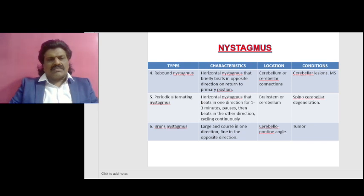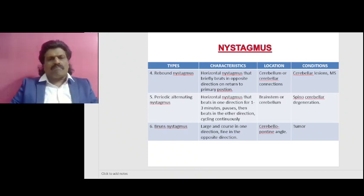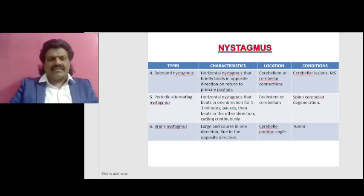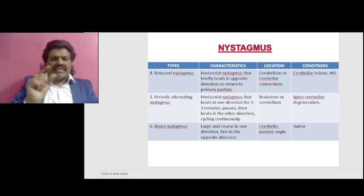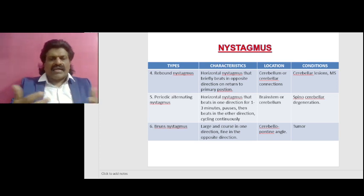Then we have rebound nystagmus, where the characteristic feature is a horizontal nystagmus that briefly beats in opposite directions on return to the primary position. We see it with cerebellar or cerebellar connection lesions, in conditions like cerebellar disease and multiple sclerosis. We also have periodic alternating nystagmus — a horizontal nystagmus that beats in one direction for one to three minutes, then pauses and beats in the other direction, cycling continuously — seen in brainstem or cerebellar locations, with conditions including spinocerebellar degeneration.